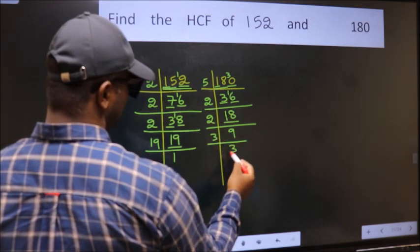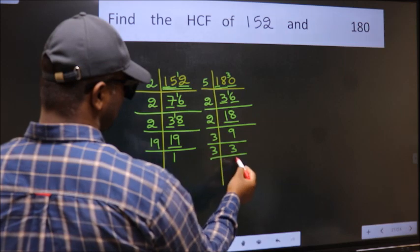9 is 3 times 3. 3 is a prime number, so 3 times 1 is 3.